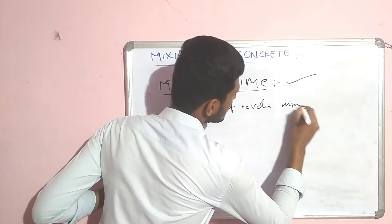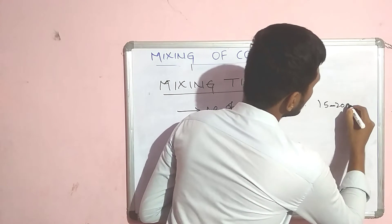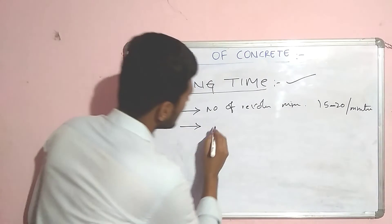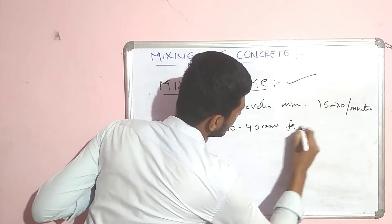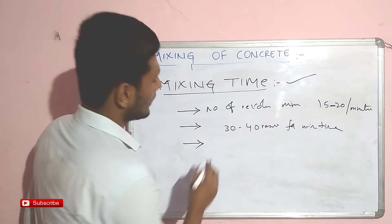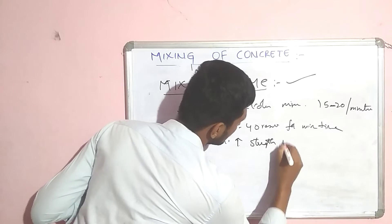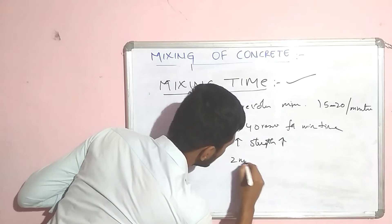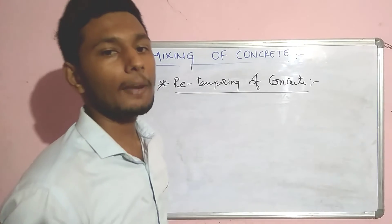Mixing time depends upon the number of revolutions of the mixer, which is generally 15 to 20 revolutions per minute. Concrete needs 30 to 40 revolutions as a minimum mix time. It is practically proved that if the mixing time is high, the strength also increases. Mixing time is a minimum of two minutes and a maximum of eight minutes for a good mixture of concrete.